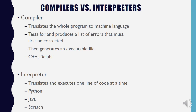Once you've written your high-level code, you need to convert it into assembly language so the CPU can understand it. For that, you need either a compiler or an interpreter. A compiler takes the whole program and translates it into machine language. If it finds any errors, it shows you where they are so you can correct them. Once corrected, it generates an executable file — the machine language code your CPU can run. Compilers are used for languages like C++ and Delphi.